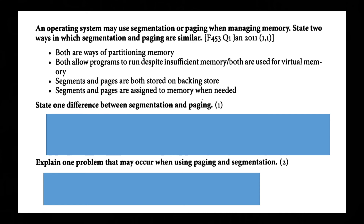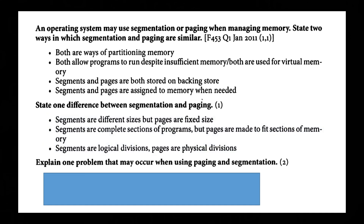State one difference between segmentation and paging: segments are different sizes but pages are fixed size; segments are complete sections of a program but pages are made to fit specific sections of memory; segments are logical divisions, pages are physical divisions. Since it says 'state one difference', only write one thing. Explain one problem that may occur when using paging and segmentation — that is two marks.